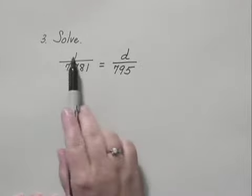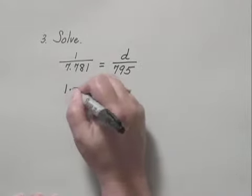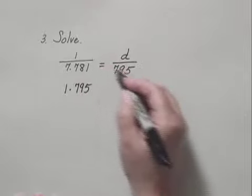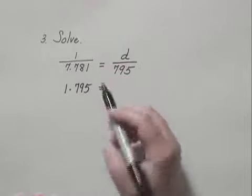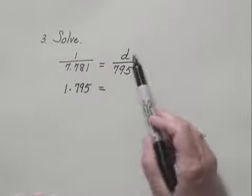Again, we equate cross products. We have 1 times 795, that's this product, equals 7.781 times D.